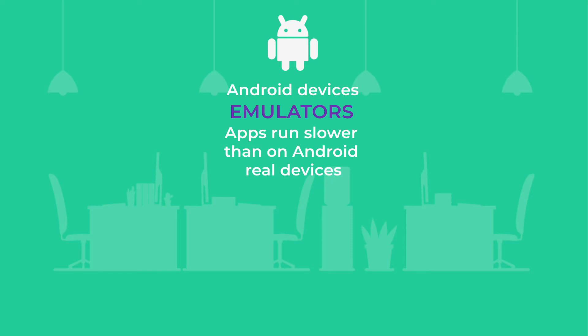Smartphones and computers are powered by different processor families. Each processor works on ISA, short for Instruction Set Architecture — it is a set of machine language commands a processor understands. To mimic the software and hardware of a target mobile device, emulators recreate a phone processor on a computer.